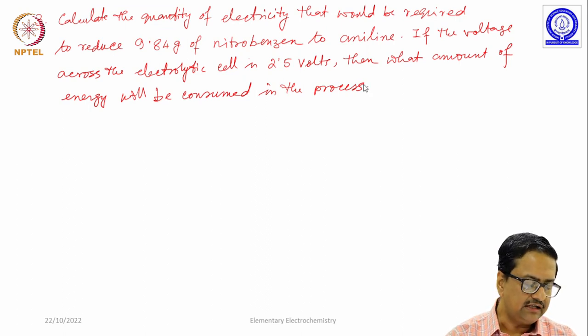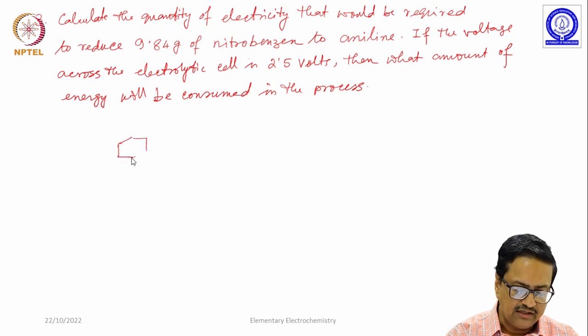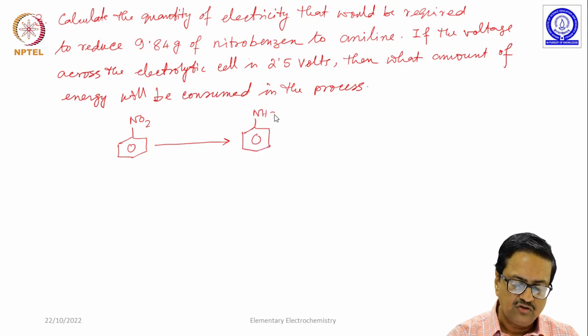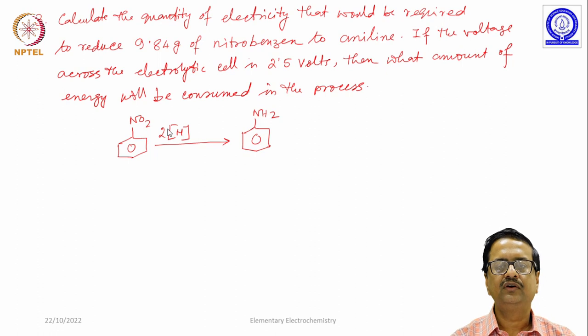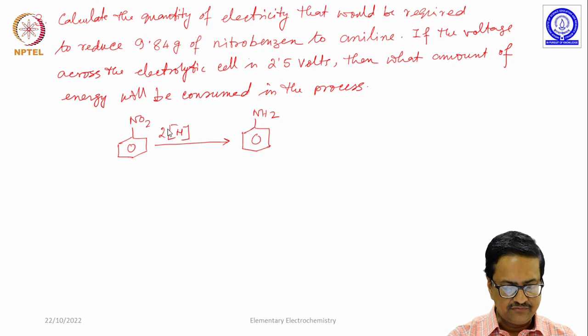Just one hint that this is how one should think about. You are doing a reduction of nitrobenzene to aniline through an electrochemical process where to do this reduction you will need 2 units of hydrogen atoms. One has to consider how to produce 2 units of hydrogen atoms by an electrochemical process.